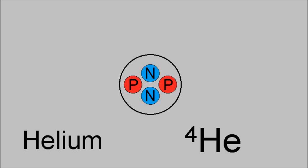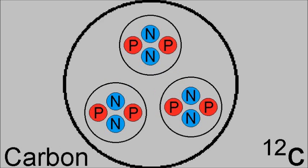Helium-4 has an atomic number of 2, consisting of 2 protons and 2 neutrons. It also has an atomic weight of 4.00260, and it is stable. Notice the depiction of helium nuclei within this carbon-12 nucleus. Alpha decay in larger atoms suggests that larger nuclei are subdivided into helium nuclei.